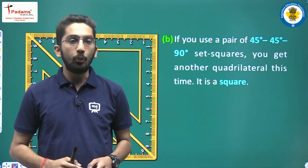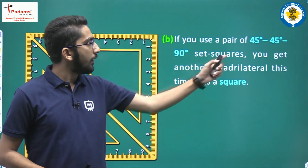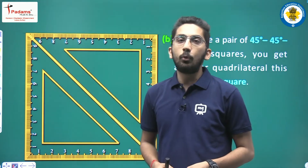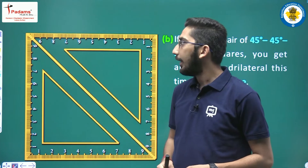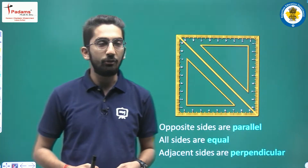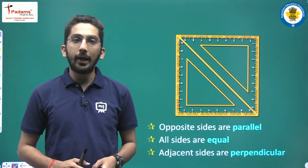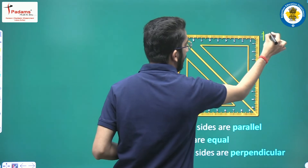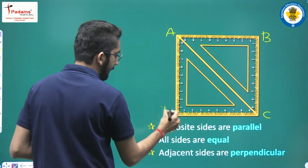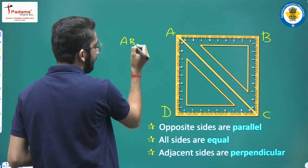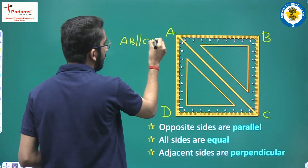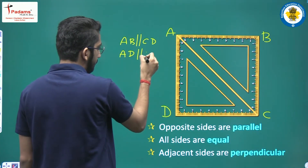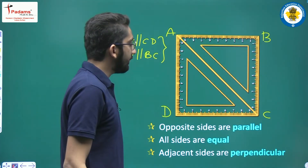Next, let's look at the square. If you use a pair of 45-45-90 set squares and arrange them together, you will get a square. Now let's see the properties of a square. First, opposite sides are parallel. If I name it ABCD, then AB is parallel to CD, and AD is parallel to BC — these are the opposite sides which are parallel.